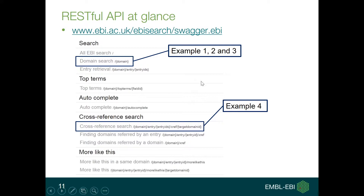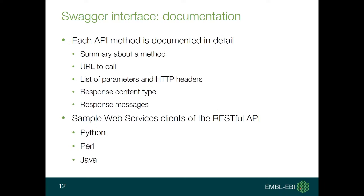We will see examples related to only a couple of methods, but we invite you to explore more on this page and ask questions through the support channels. In the Swagger interface, you will see for every method a short summary, the URL to call to invoke the service, a list of parameters with allowed values, and HTTP headers that can be set.